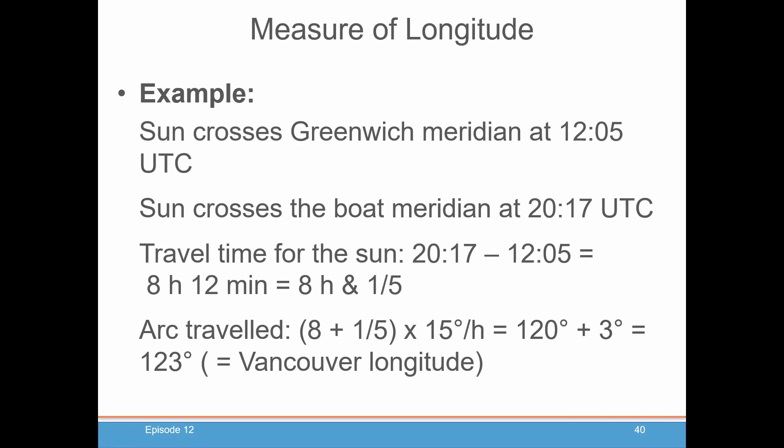Back to longitude. We know the sun crosses the Greenwich meridian on a particular day at 12 o'clock UTC. We measure when the sun crosses the boat meridian — that's when it gets to its highest point in the sky, south of you if you're in the northern hemisphere, north if you're in the southern hemisphere. If the sun crosses your meridian at 20:17 UTC, you subtract those two times and get 8 hours and 12 minutes. Calculating 8 and 1/5 times 15 gives 123 degrees — about the longitude of Vancouver.